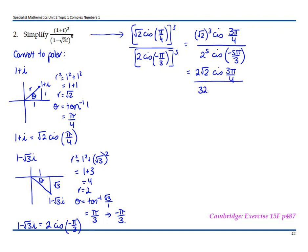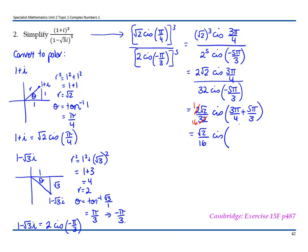2 to the power of 5 is 32, giving us 32 cis(−5π/3). We're now dividing two complex numbers, so we have 2√2 over 32, and we subtract the angles — subtracting a negative becomes a plus. Simplifying 2/32 gives √2/16. For the angle, using a common denominator of 12: 9π/12 plus 20π/12, which gives us √2/16 cis(29π/12).